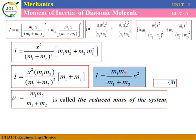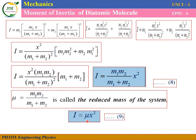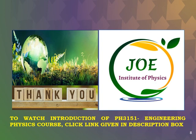The term μ = m1·m2 / (m1 + m2) is constant for a diatomic molecule and is called the reduced mass of the system. Therefore, the moment of inertia equation is I = μ·x², where μ is the reduced mass. This is similar to I = mass × distance², where the mass here is the reduced mass μ. Thanks for watching this video by Joe InstaPhysics. Kindly subscribe to this channel. Thank you.